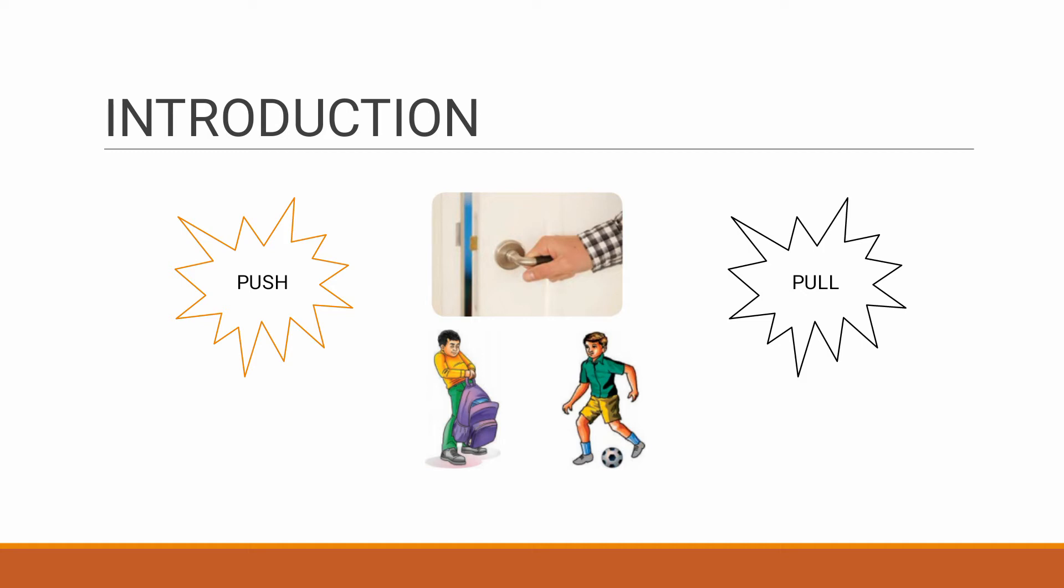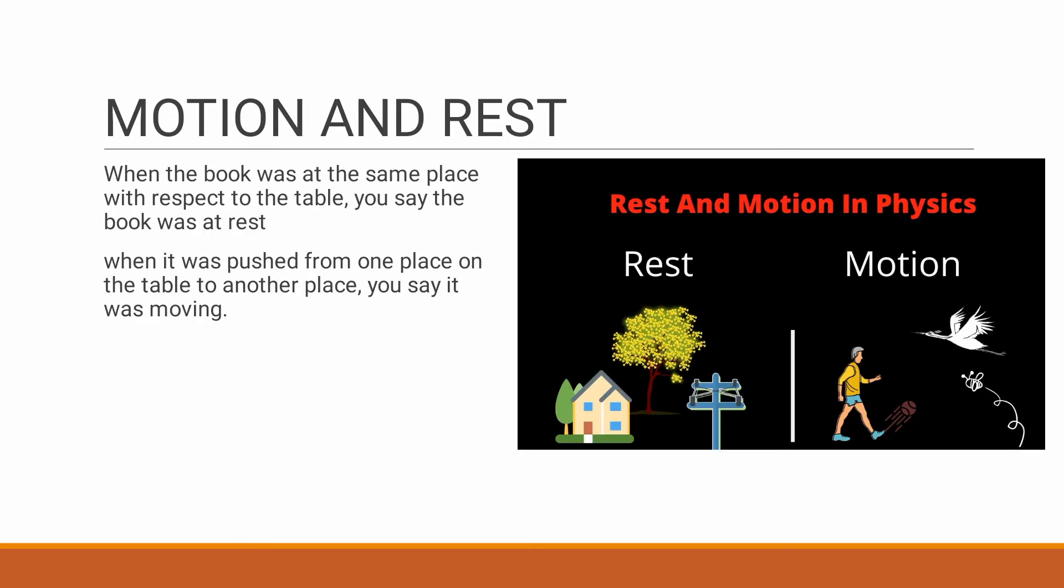Next one is motion and rest. When an object is not moved from its place we say it is in rest. When a book is in the same place with respect to table then we can say that book is at rest. We have seen a lot of examples in real life which does not move from its place like house, electric post, etc.